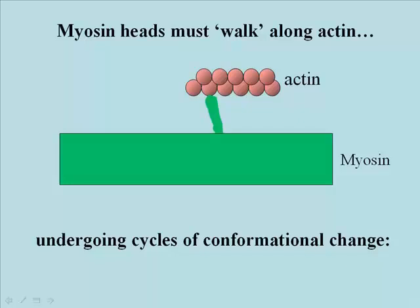So let's see if this diagram makes any sense. A myosin head bound to actin became unbound. That same myosin head just shifted in position, changed in shape, changed its conformation, and in its new conformation it could bind actin again, but this time it bound an actin monomer further along the actin filament.